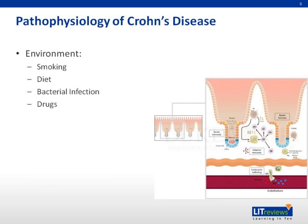Environmental factors are known to have an effect on Crohn's disease. These include smoking, which has been shown to double the risk of Crohn's. Crohn's may also improve when changed to a liquid diet, while fatty foods exacerbate Crohn's. Bacterial infections by E. coli, mycobacterium paratuberculosis, and measles virus are also implicated. Drugs such as oral contraceptive pills and NSAIDs have also been shown to affect Crohn's.